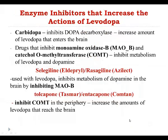Side effects: selegiline inhibits the MAO-B enzyme, but at high doses these drugs may also inhibit MAO-A, which metabolizes norepinephrine and serotonin, and that can cause a hypertensive crisis. Selegiline and tolcapone also cause increased levels of levodopa and dopamine in the patient's system, which can lead to nausea, orthostatic hypotension, and dyskinesias.